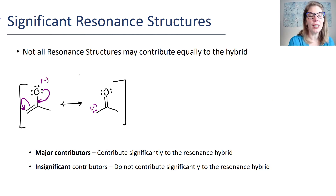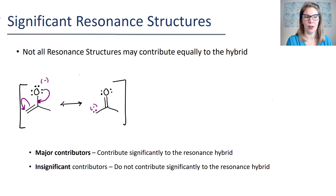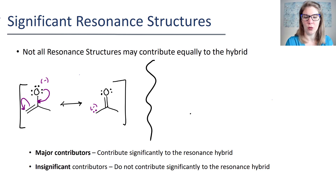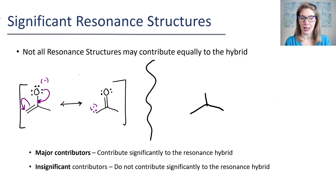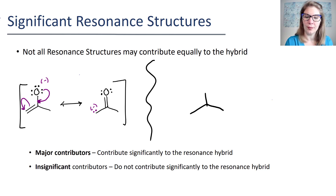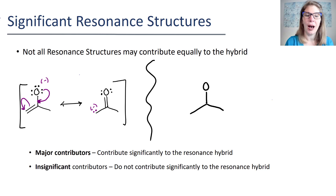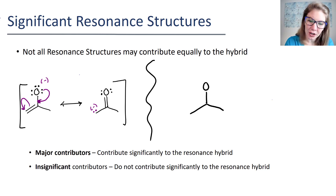If we wanted to draw the resonance hybrid for this, what we would do is draw all of the single bonds that don't change and then we would include the pi bonds as dashed.